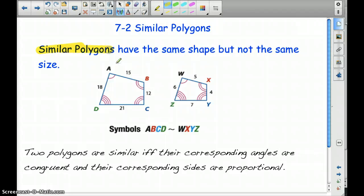The big thing about similar polygons, they're similar if and only if their corresponding angles are congruent, so the corresponding angles have to be congruent, and their corresponding sides are proportional.